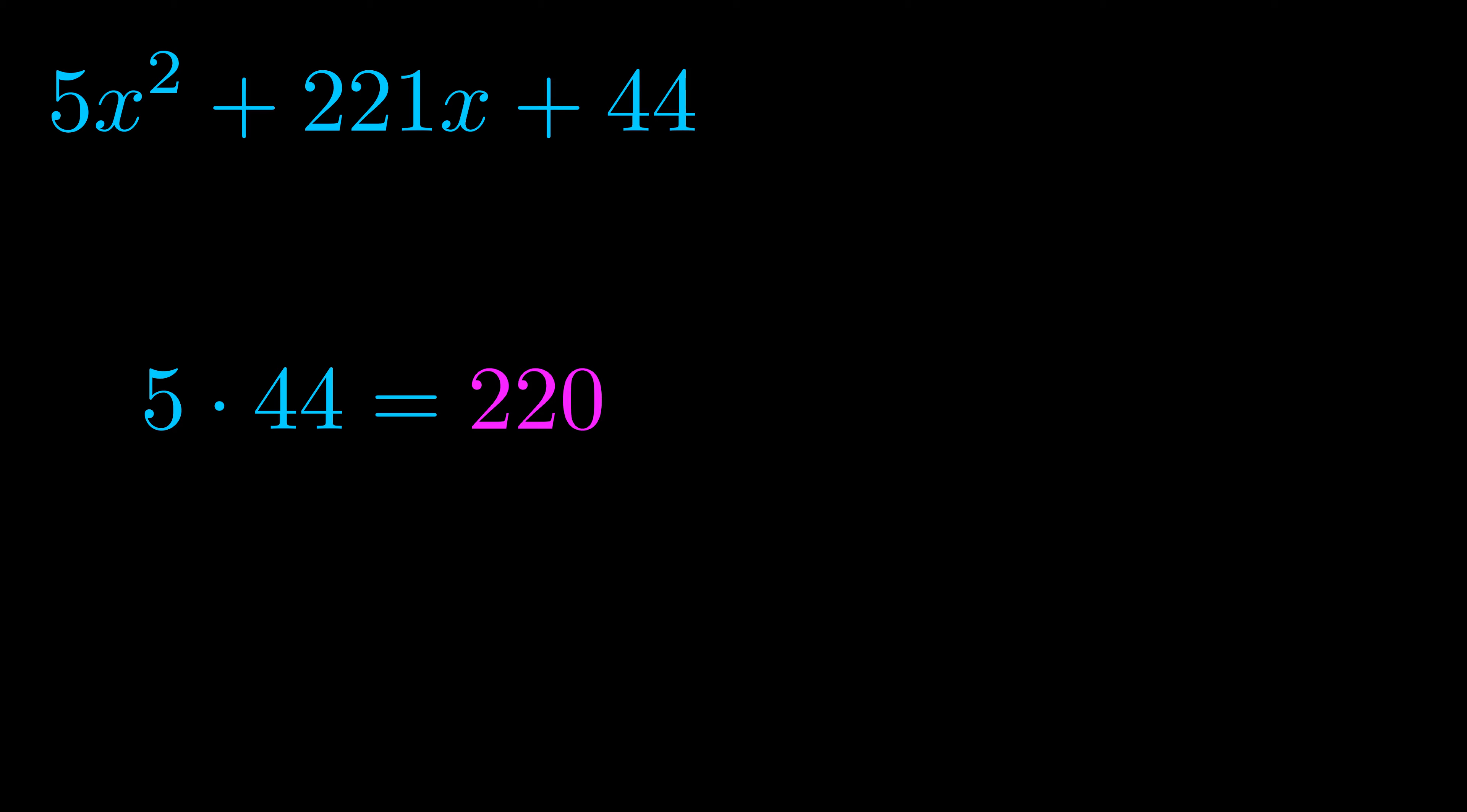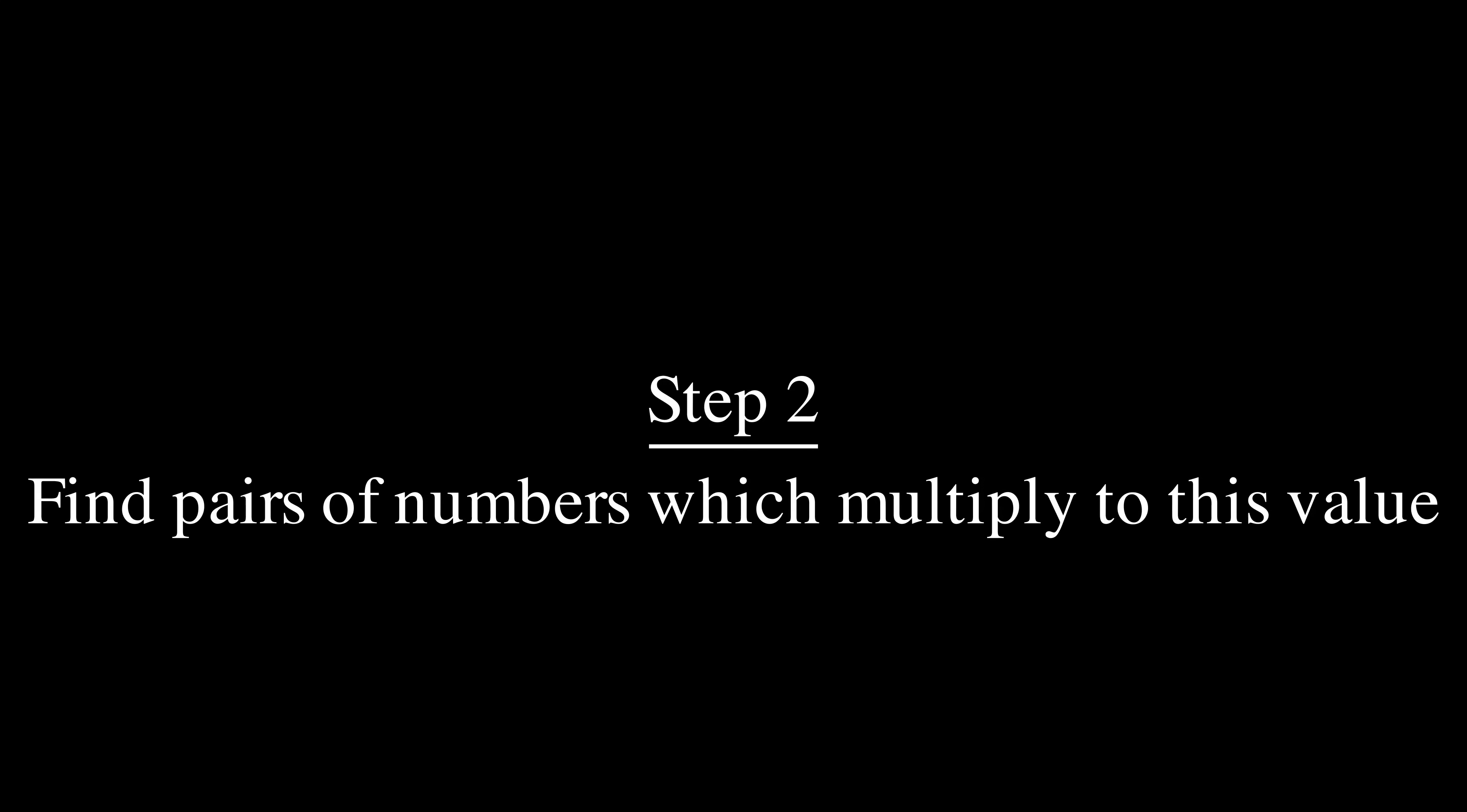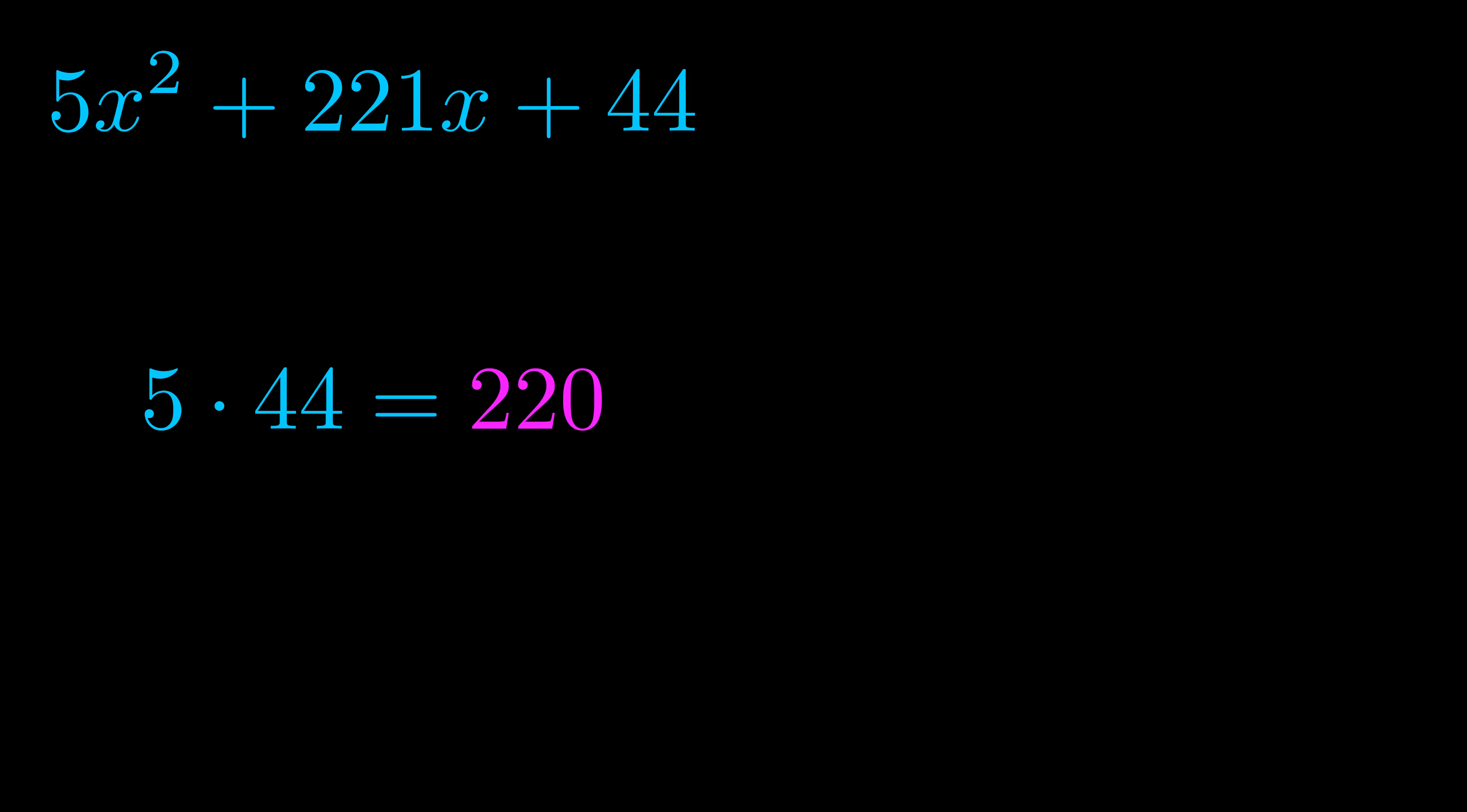When we multiply these two values we get this value here in magenta. Step two is to try to find all of the pairs which multiply to this number. Now it turns out you don't really need to find all of them, but go ahead and write down as many numbers as you can that multiply to the magenta value for now.